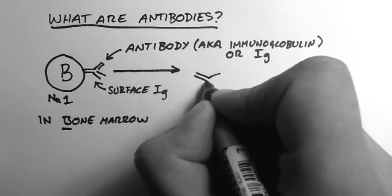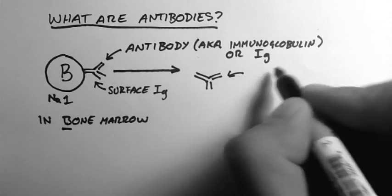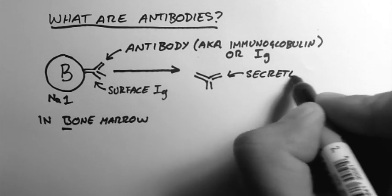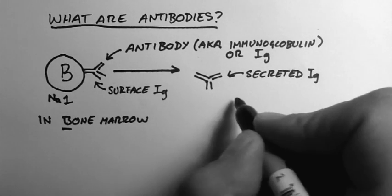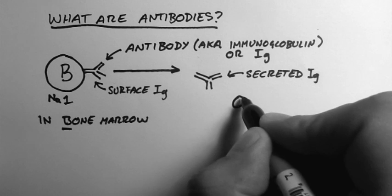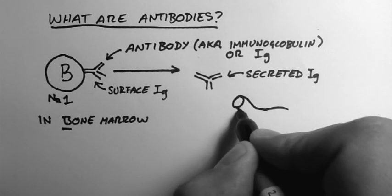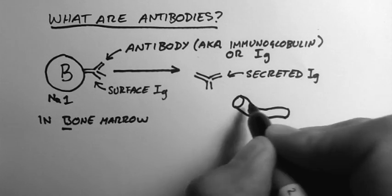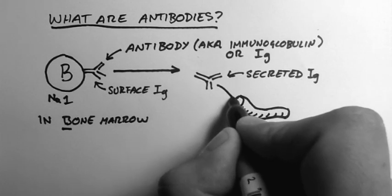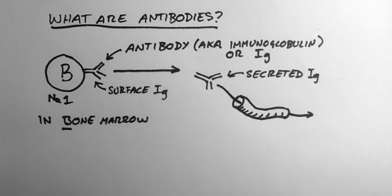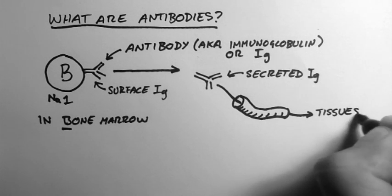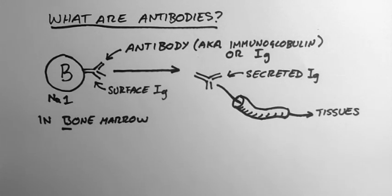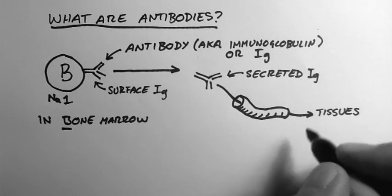Now the antibody can be released which makes it a secreted immunoglobulin, and this can travel through the blood to its target tissues. These can be right throughout the body.